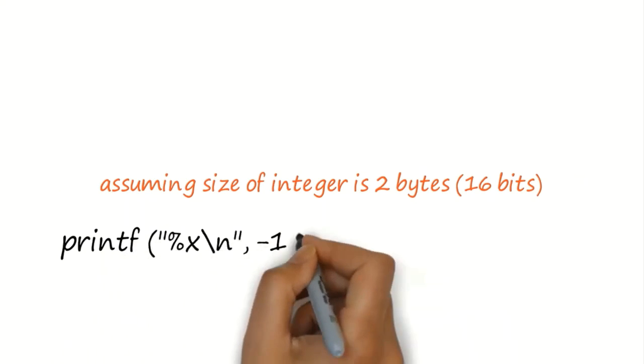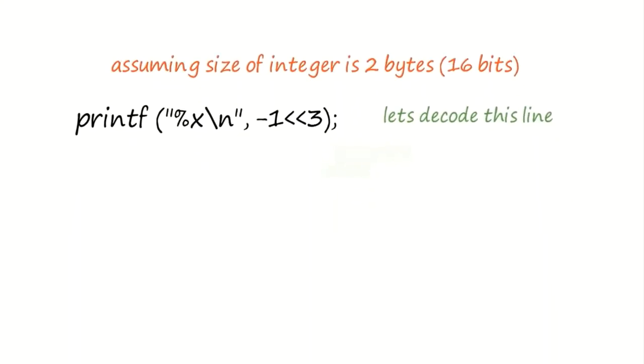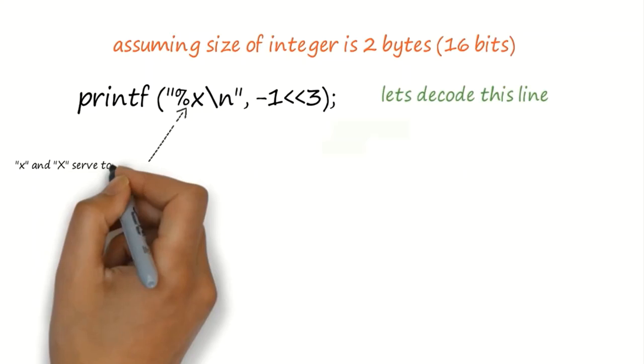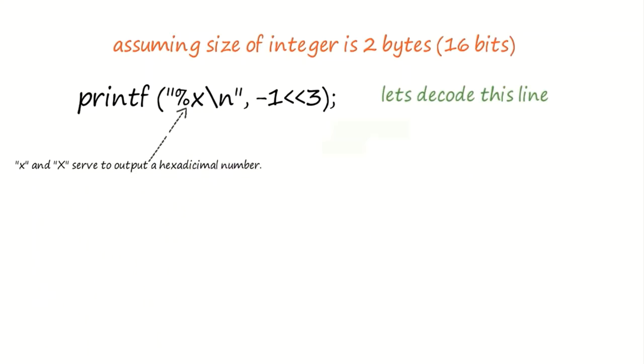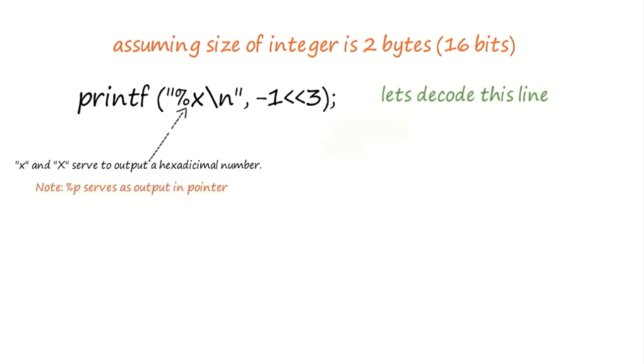Now, let's try to decode the printf statement. %x denotes output will be in hexadecimal format. Hexa number representation uses a to f for representing 10 to 15. Therefore, if %x is given, where x is in lowercase, denotes lowercase alphabet representation. On the other hand, % capital X represents uppercase alphabet representation.